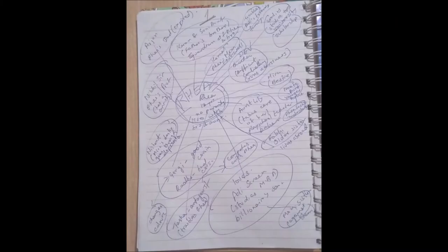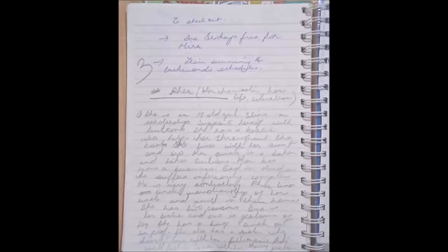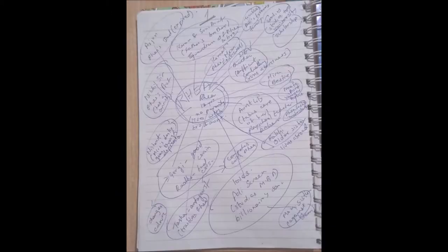Rhea is somebody who has no parents and lives with her aunt and her brother. I brainstorm different ideas in the form of a cluster diagram in the beginning. I'll show you my diary where I have outlined this novel and the way I have brainstormed different ideas, charted down points, and outlined the entire novel. As you can see, I have drawn the cluster diagram.